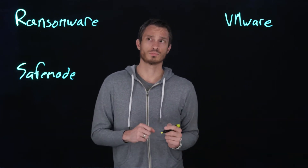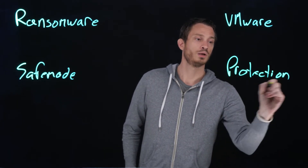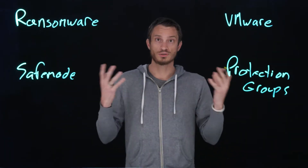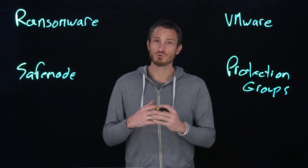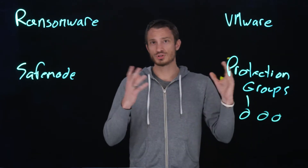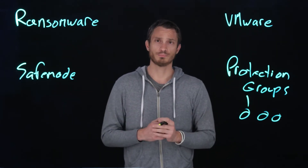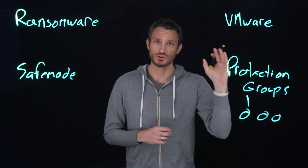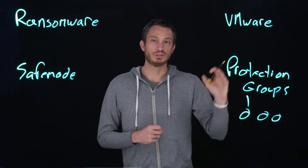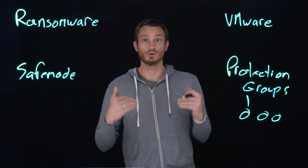On the Flash Array, we have things called protection groups. Protection groups do many things: they provide replication, snapshots, consistency of point-in-times, and schedules and, importantly, retention policies. You can put multiple volumes in these protection groups so they are snapped together in a write-consistent fashion and replicated locally, remotely, whatever the case may be. When Safe Mode is enabled, these protection groups are protected — the retention cannot be removed, things cannot be deleted, and those point-in-times cannot be deleted by someone who gained administrative or lower-level access to the array.